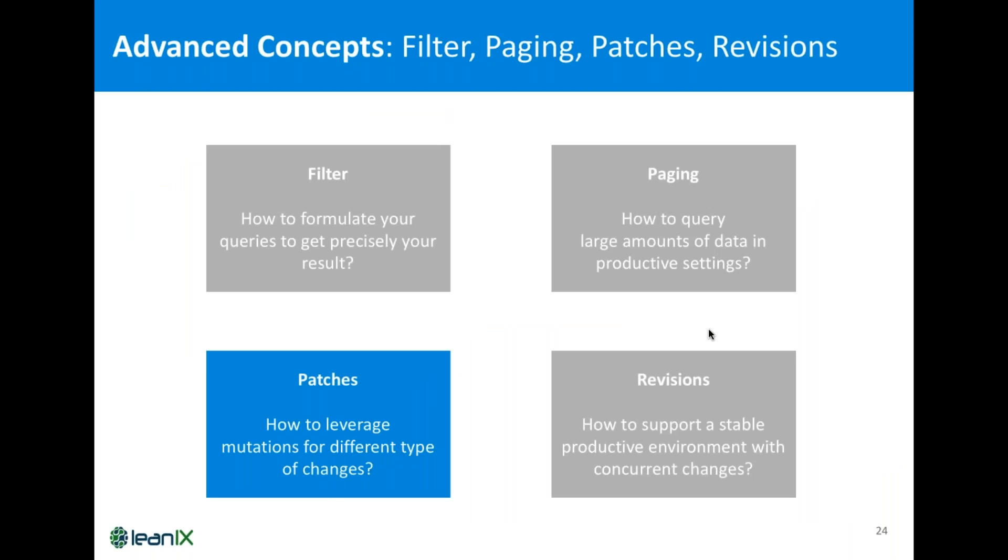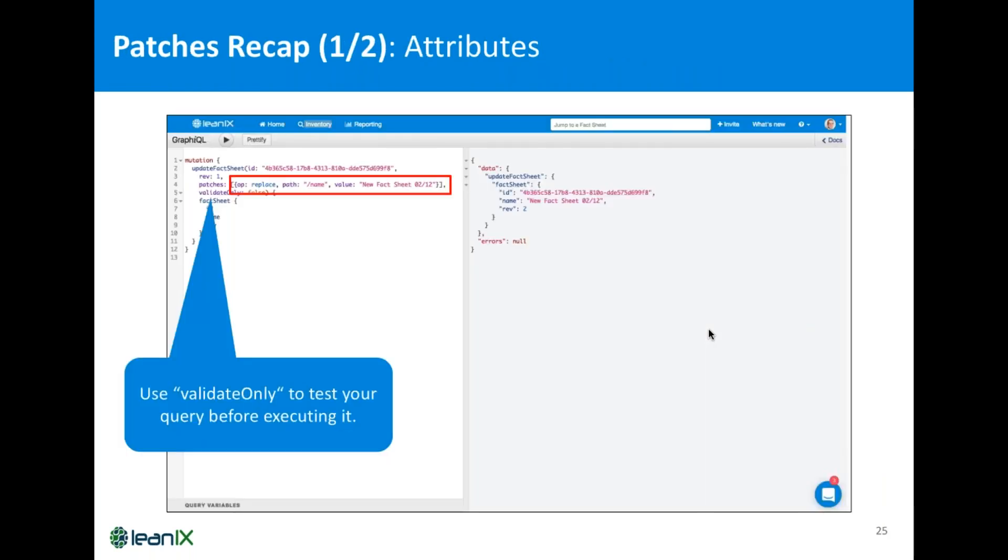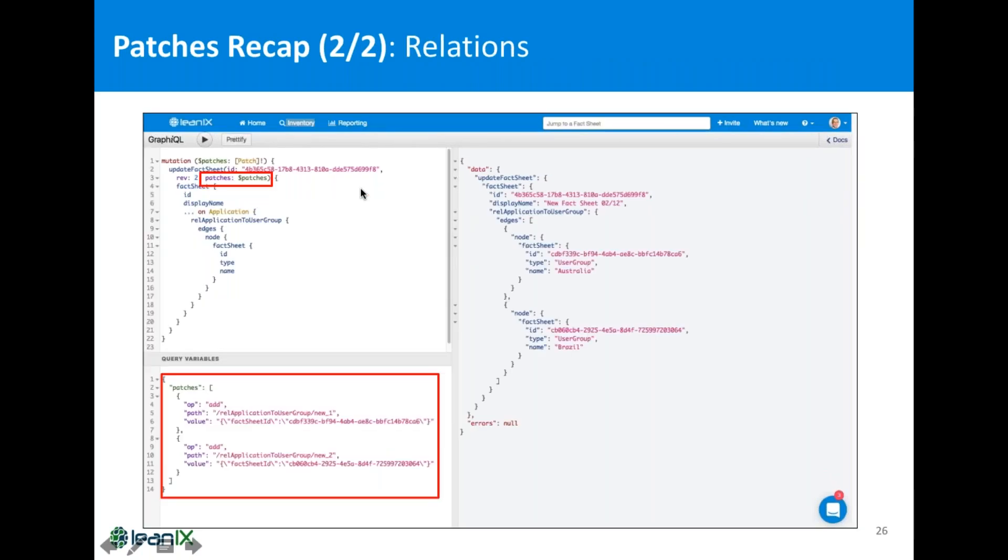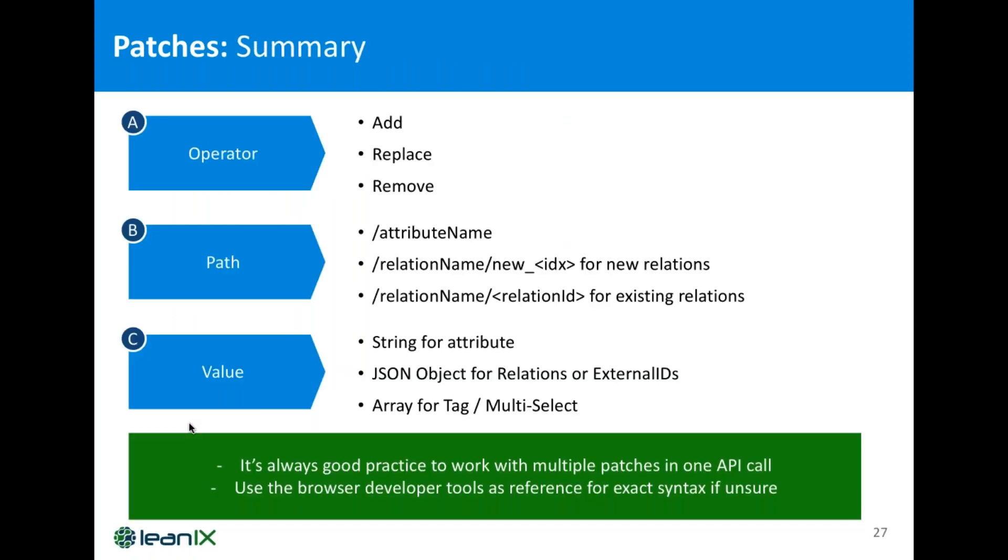So, let's move to the mutation side. I introduced briefly in the last part of the webinar that patches are required to update data. So, what is a patch? Recalling, you can patch attributes. So, you have an operator, you have a path and a value and you can also patch relations. So, you can again have an operator, a path and a value. You see that the syntax is slightly different and I want to provide you a quick overview of the arguments you need to put here. So, for patches, we support three operators. We support an add operator which adds a new attribute or relation. We support a replace operator which replaces obviously some existing and we support a remove operator.